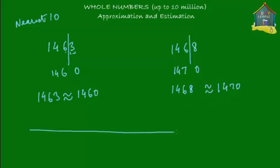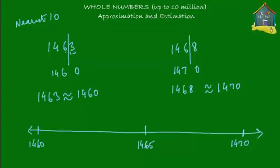On the number line, place 1,460 on the left and 1,470 on the right, with the midpoint at 1,465. 1,463 lies to the left of 1,465, so it rounds down to 1,460. 1,468 lies to the right of 1,465, so it rounds up to 1,470.